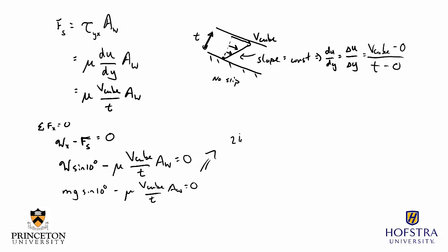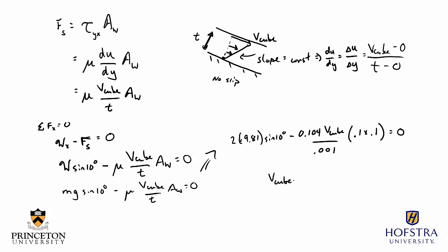Plugging in the numbers: mass is 2 kilograms, g is 9.81, times sine of 10 degrees, minus viscosity 0.104, times V cube divided by thickness 0.001, times the wetted area 0.1 times 0.1. This gives one equation with one unknown. Solving for the velocity of the cube yields 3.28 meters per second.